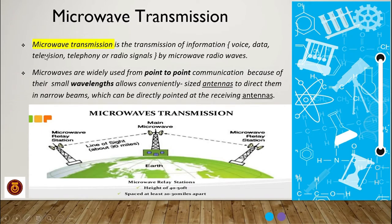Microwave transmission is the transmission of information, voice, data, television, telephony, or radio signals by microwave radio waves. Microwaves are widely used for point-to-point communication because their small wavelengths allow conveniently sized antennas to direct them in narrow beams which can be pointed at the receiving end.